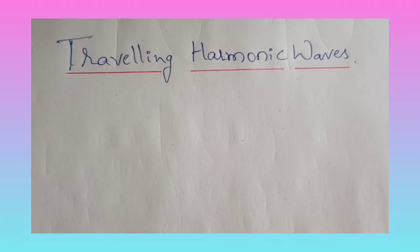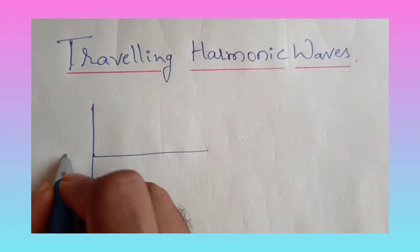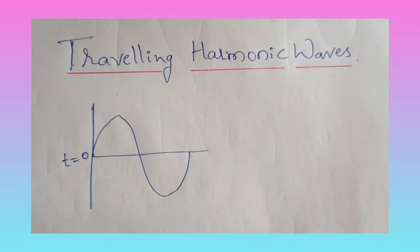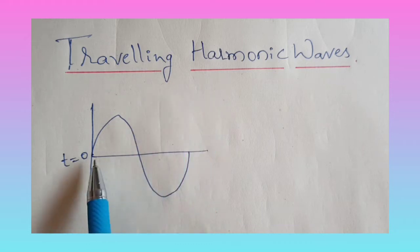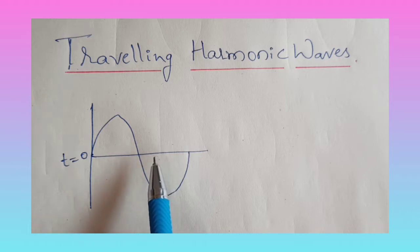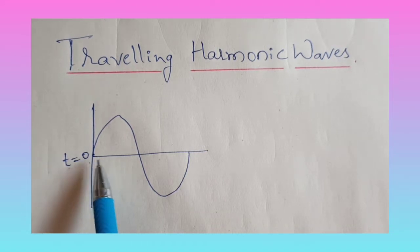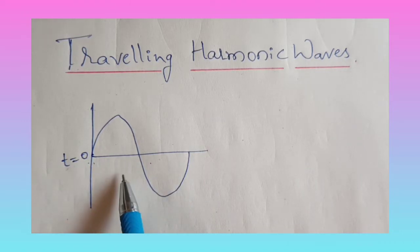Hello everyone. Today in this video I am going to derive the equation for traveling harmonic waves. So let us draw a wave. Suppose this is time t equal to zero. As the name itself indicates, a traveling harmonic wave means any harmonic wave which is traveling. At time t equal to zero, the displacement forms a sine curve or a cosine curve — this is a sine curve.